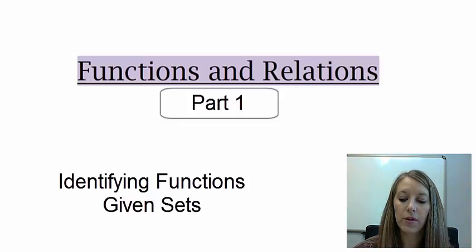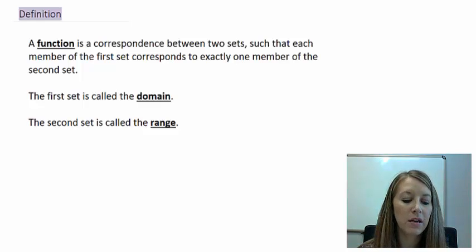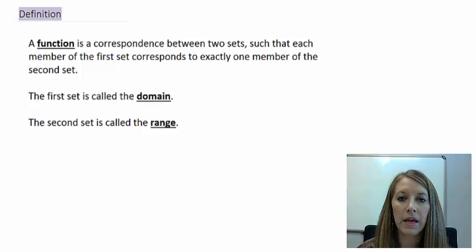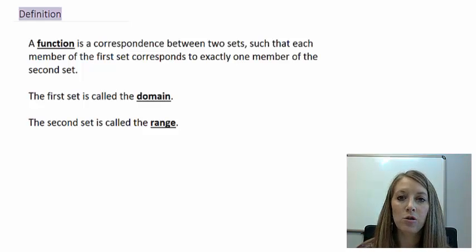Functions and relations. A function is a correspondence, or relationship, between two sets such that each member of the first set corresponds to exactly one member of the second set. So each unit in the first set can only relate to exactly one member of the second set. The first set is defined as the domain and the second set as the range.